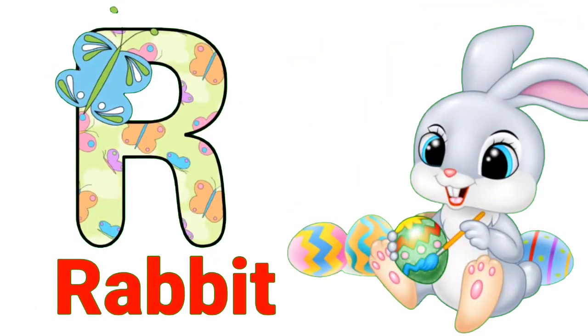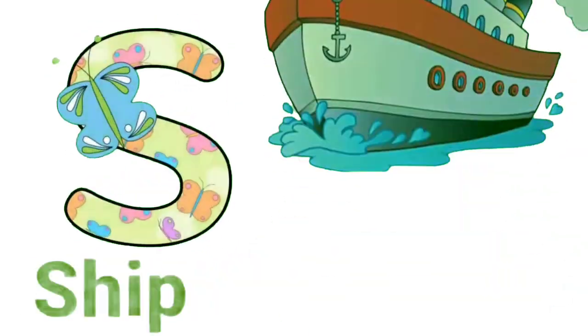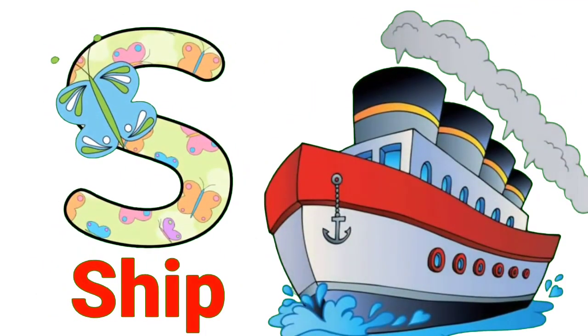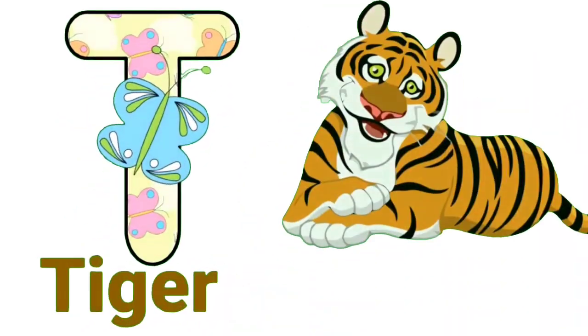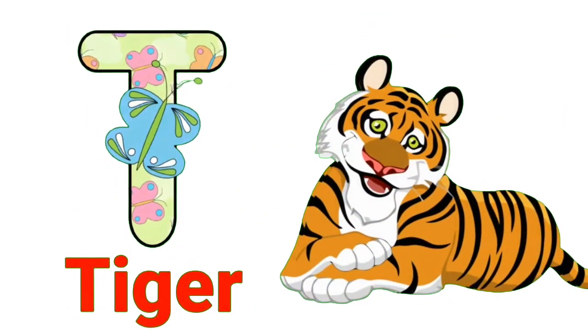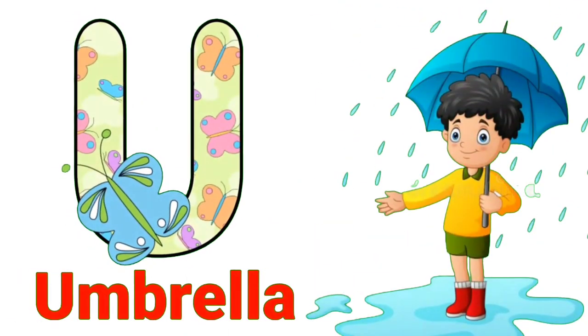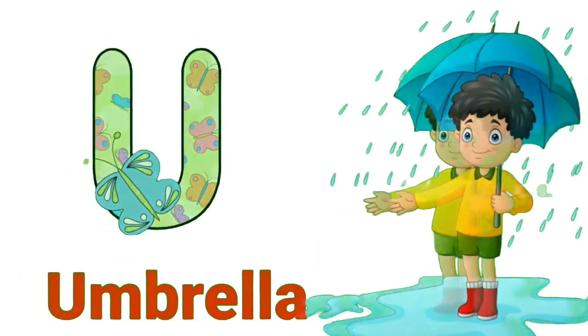R for rabbit, S for sheep, T for tiger, U for umbrella.